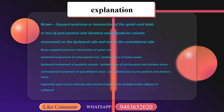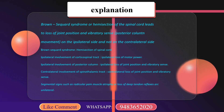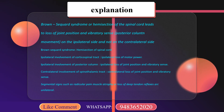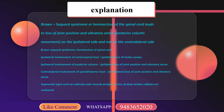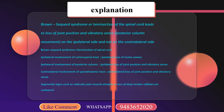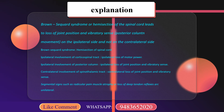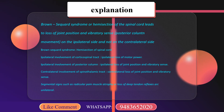In Brown-Séquard syndrome there is a hemisection of the spinal cord, leading to loss of joint position and vibratory sense. There is posterior column involvement on the ipsilateral side — not the contralateral side.